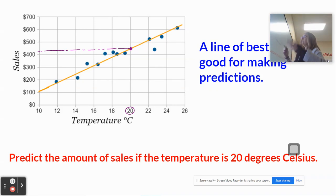I can do other amounts. 14 degrees Celsius. Follow it up. Look at the line only, and follow it over. About $250, I can expect to make if the temperature's 14 degrees Celsius.